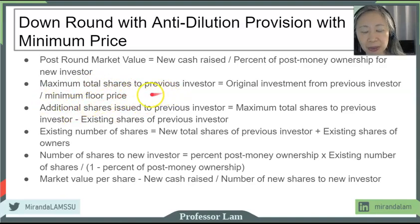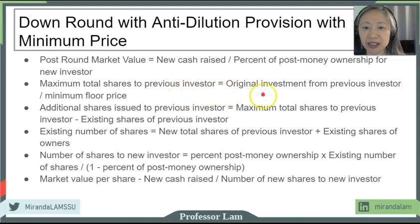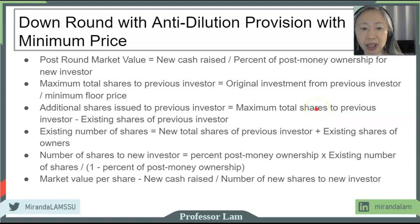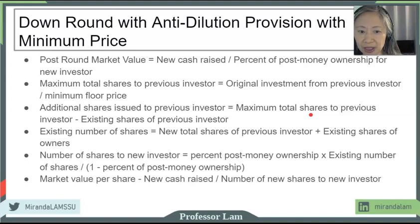What is included here compared to when there's no minimum price is that instead of issuing as many shares as necessary to make the previous investor whole, there is a maximum number of shares that we're going to give them. Anything beyond that will represent the losses borne by the previous investor, and those losses will show up as percentage ownership.